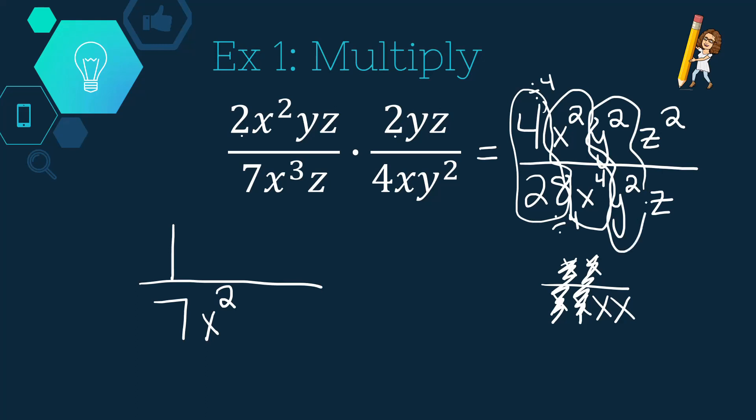I have a y squared over a y squared. They're just going to cancel out. Then I have a z squared over a z. Well, that means I have two z's on top and a z on the bottom, which would mean I would have one z left on top after I cancel. For a final answer, of one z over seven x squared.